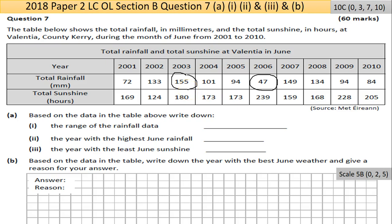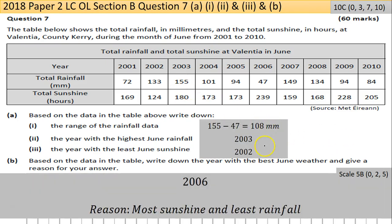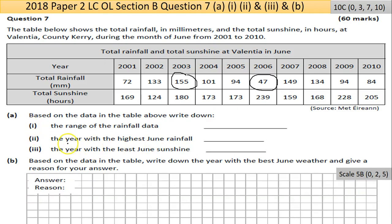The answer is done on the next page. Part A, part two: the year with the highest June rainfall. Again, looking at the rainfall, the highest seems to be 155, so the answer for part two is 2003.